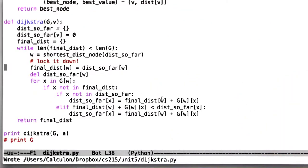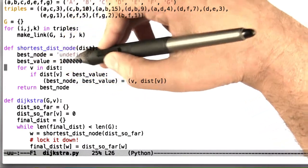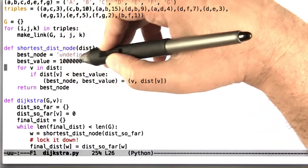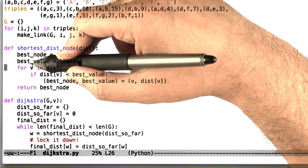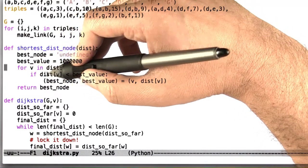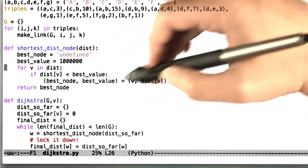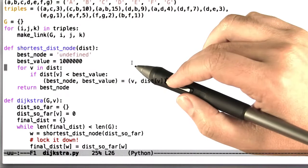And in fact, that's what I implemented here. So shortest dist node, you give it the mapping of distances. And it starts off with the best node, undefined, and best value, something big. I probably really want something bigger than this. And for all the nodes that we have distances for, if the distance for that node is better than the best we've seen so far, reassign. And so when you're done, just return the best node.